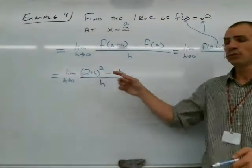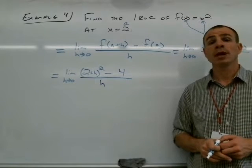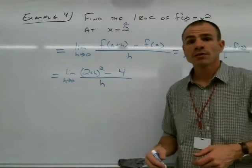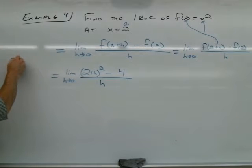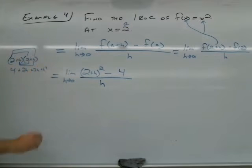How do you think we should attack this numerator? If you said that we should expand the binomial, you are correct. 2 plus h squared is really 2 plus h times itself. 2 plus h times itself. We're going to FOIL. First gives us 4. Outer gives us 2h. Inner gives us 2h. And last gives us h squared. So if we have 2h and 2h, we really have a total of 4h here.